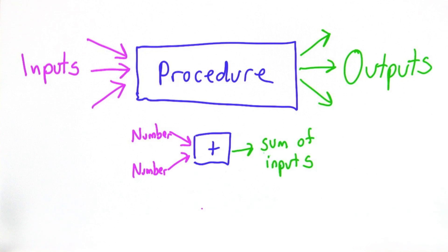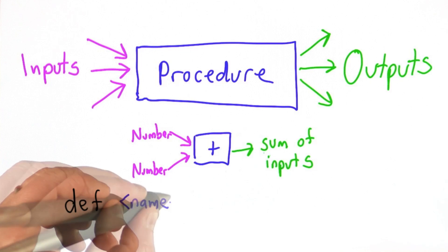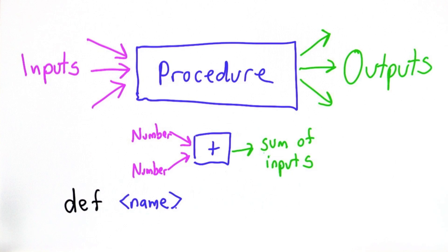What we're going to learn in this unit is how to make our own procedures. Python provides a construct for doing that, and the grammar is to have the keyword def, that's short for define, followed by a name, and the name of a procedure is just like the name of a variable.